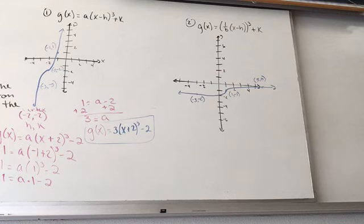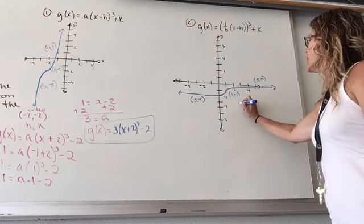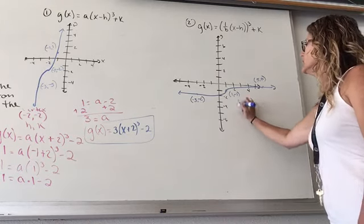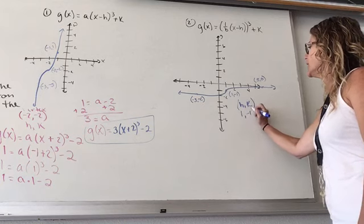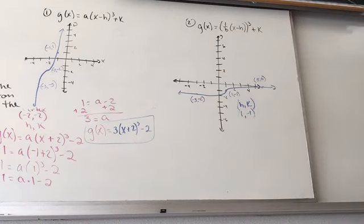So again, look for the vertex, that turning point. 90% of the time, it's going to be right there in the middle. So my H, K is at 1, negative 1, that turning point. There are a few problems in the book where it's not in the middle. You just got to find that turn.